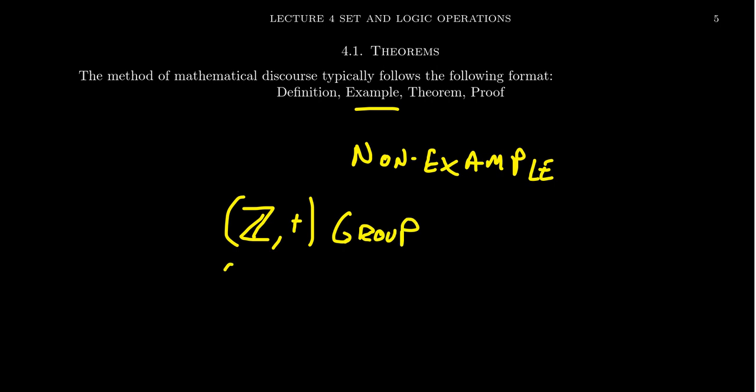But we might also then say that the natural numbers with respect to addition is not a group. It doesn't satisfy the properties illustrated in the definition. So sometimes we need examples, but also non-examples so we can distinguish the difference between them.